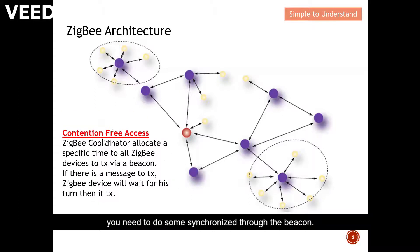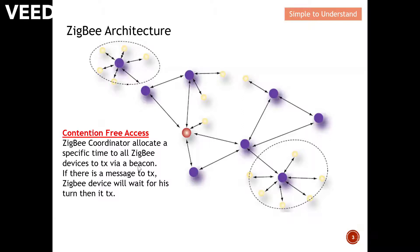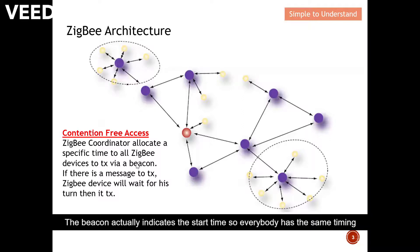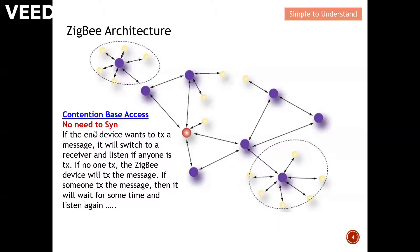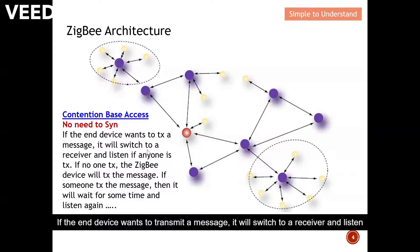Next, contention-based access. For this method you don't need to synchronize. In the earlier method, synchronization was done through the beacon — the beacon indicated the start time so everybody had the same timing, and from the beacon devices found their guaranteed time slot. For contention-based, you don't actually need to synchronize, which means you don't need to send a beacon.